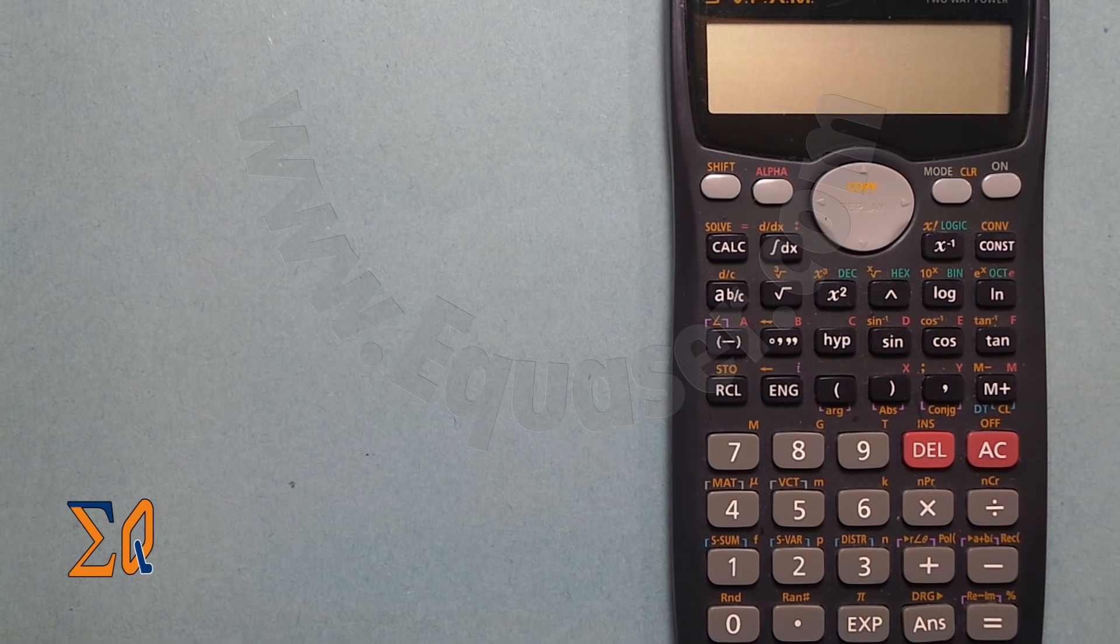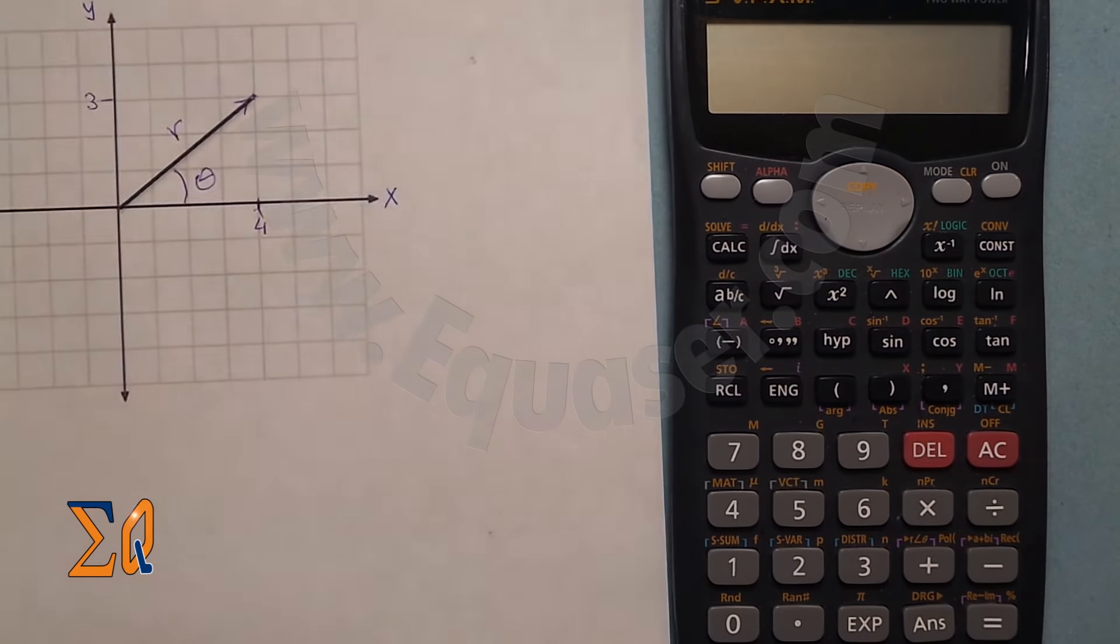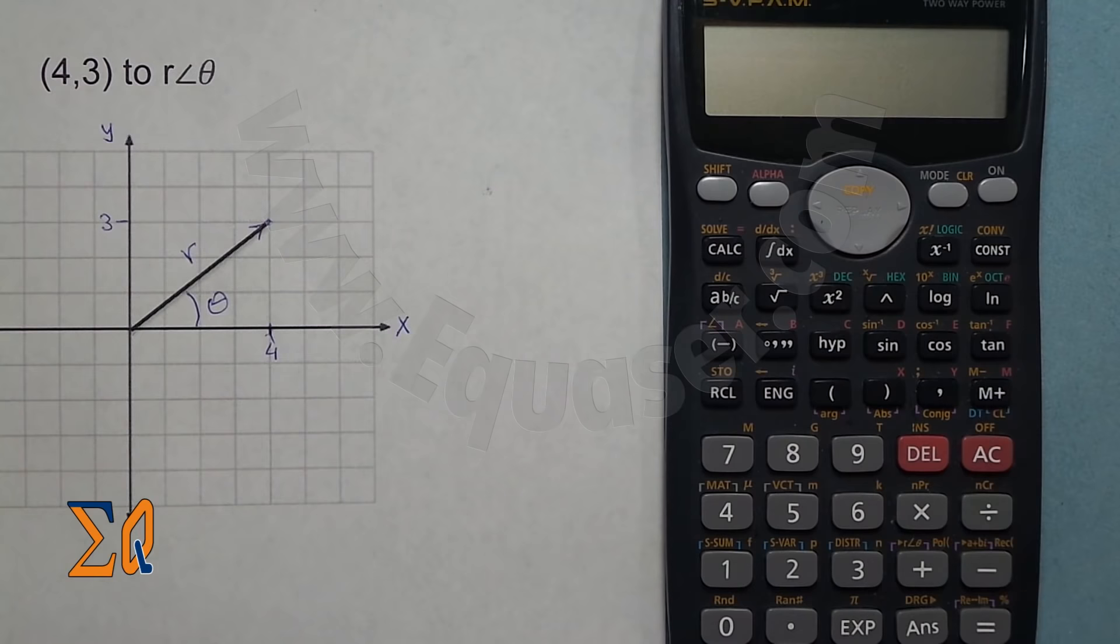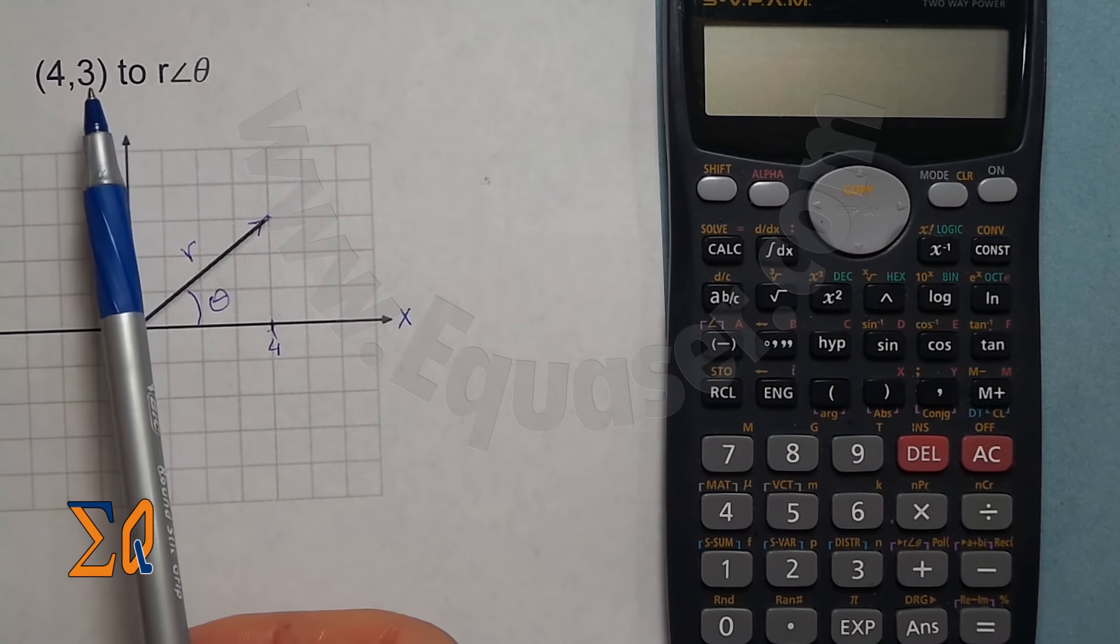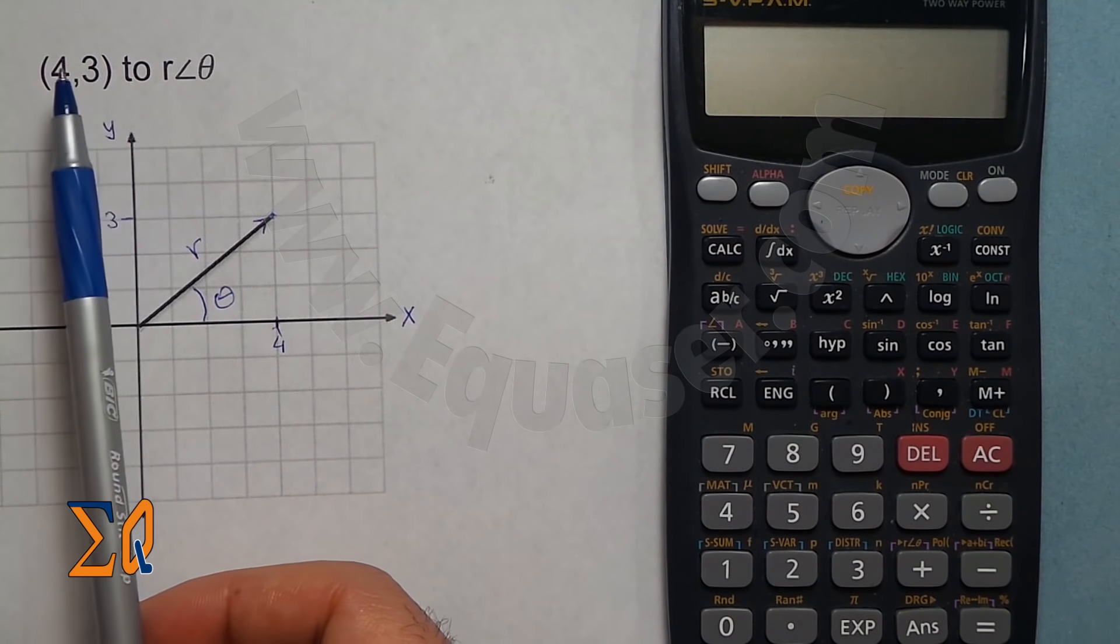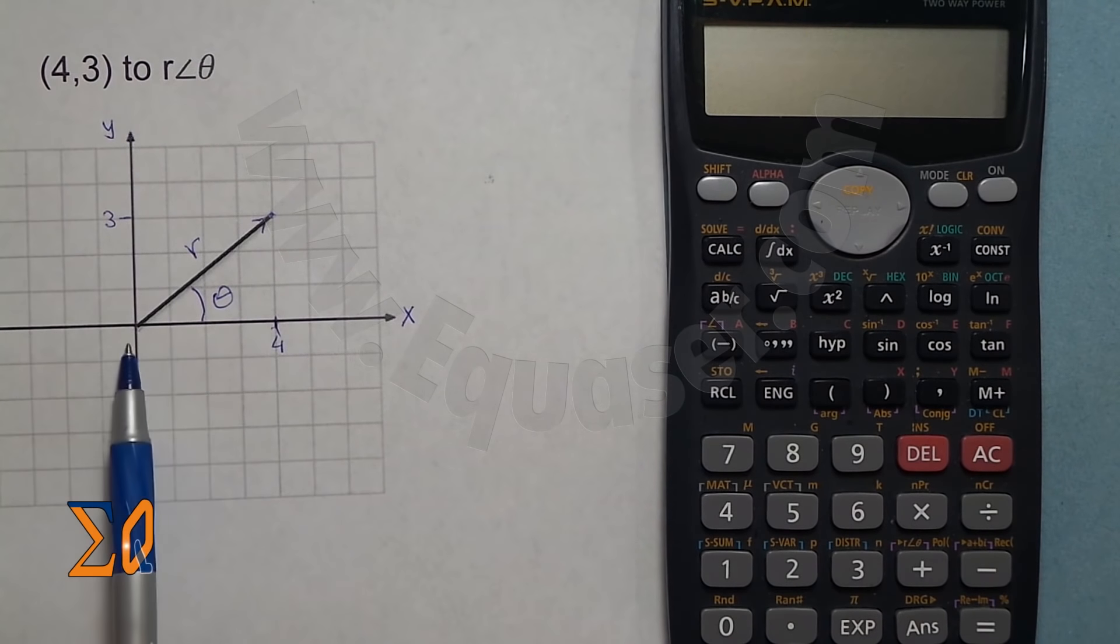Hello everyone, in this tutorial we're going to use this Casio calculator to convert coordinate values. Here I have a Cartesian or rectangular value of 4 and 3. 4 is the value for X which is 4 here, and 3 for Y is 3.